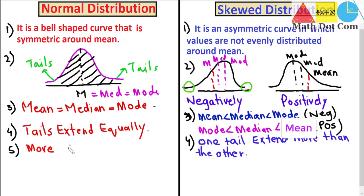Normal distribution is more common as compared to skewed distribution. It is more common and more robust, and it is easier to interpret the data if it is normally distributed. Skewed distribution is less common.